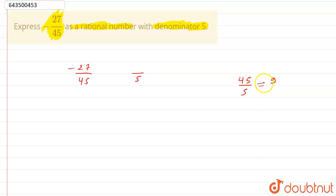So we should express our numerator also in the multiple of 9. So I can write this minus 27 as minus 3 into 9 and 45 as 5 into 9.